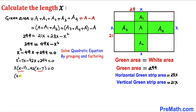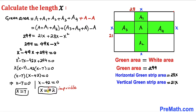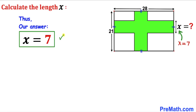Since (x − 7) is common, we factor it out: (x − 7)(x − 42) = 0. This gives x = 7 or x = 42. However, x = 42 is not possible given the rectangle's dimensions of 21 and 28, so we reject it. Therefore x = 7 units.